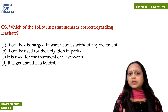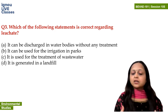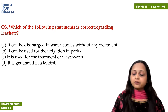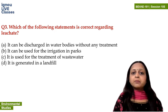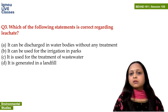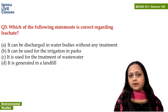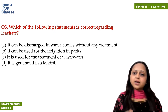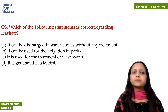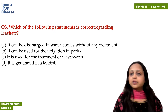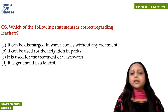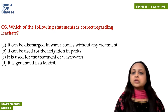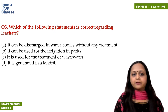The question asks which statement is correct regarding leachates. Leachates can be toxic or non-toxic chemicals leaking from the landfill. Option: they can be discharged in water bodies without treatment — this is false. Used for irrigation in parks — definitely no, because they can be toxic. Used for treatment of wastewater — false. The correct answer is D: leachates are generated in the landfill.